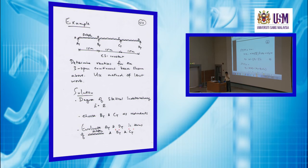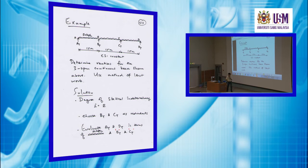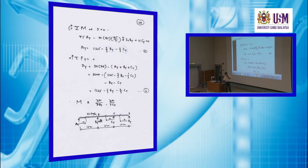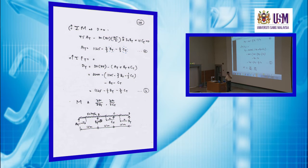This slide shows the calculation process — the normal application of equilibrium equations. Taking moments at D, you find AY as a function of BY and CY. Another equilibrium equation gives DY also as a function of BY and CY. The only difference here is that you have two redundants, BY and CY. When there are two redundants, you have to evaluate the partial differentiation of the bending moment with respect to both redundants — first with respect to BY, then with respect to CY.